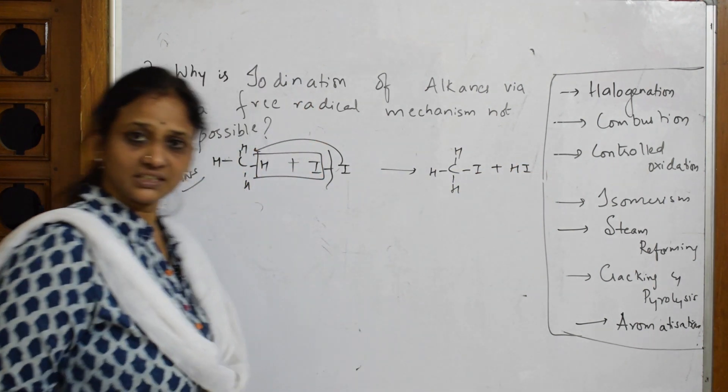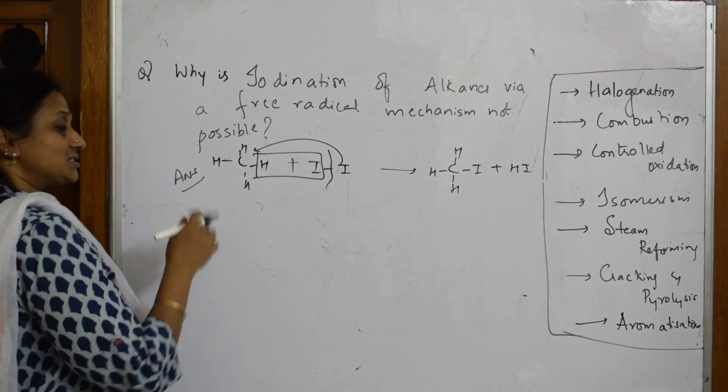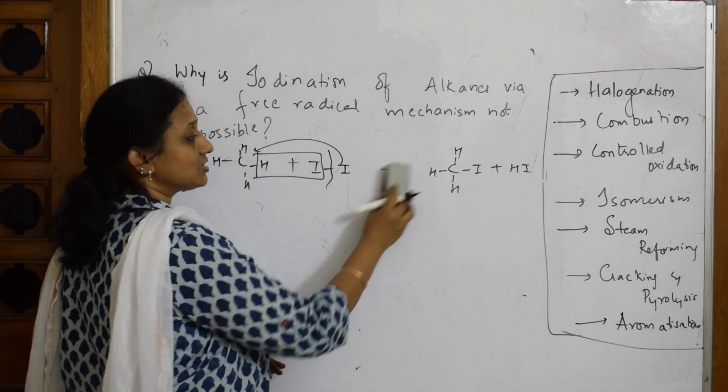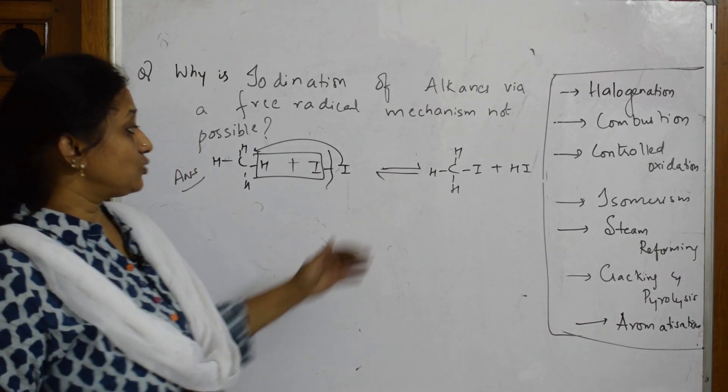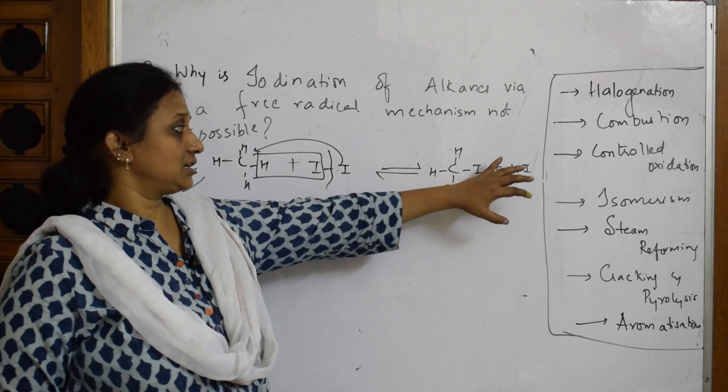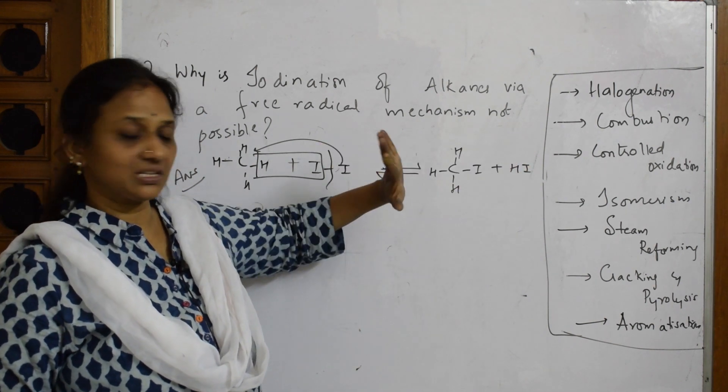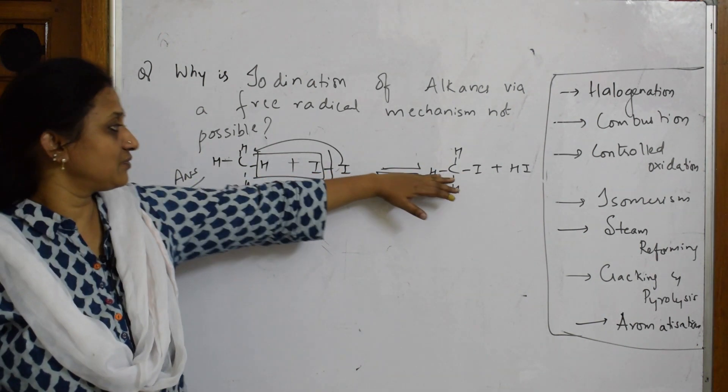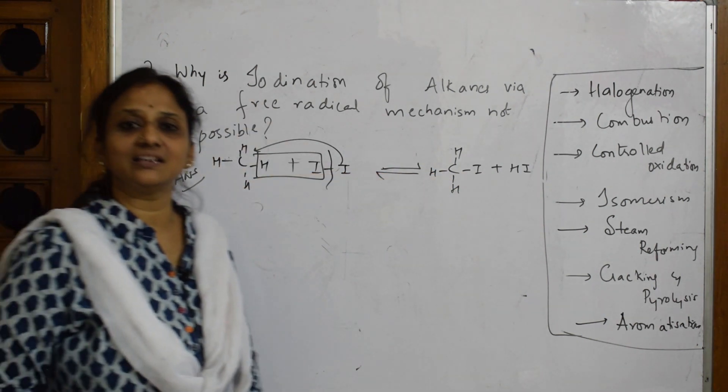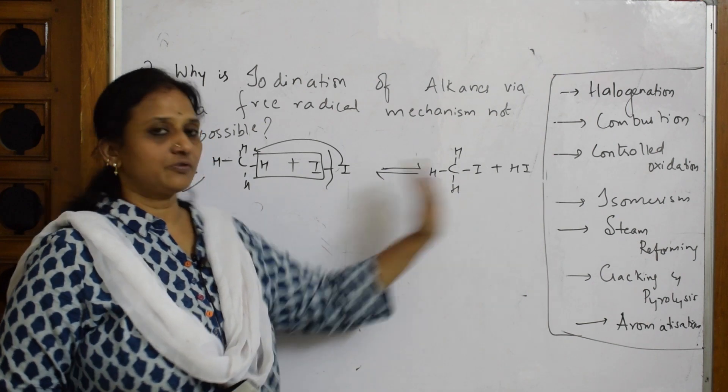Now, this particular reaction is a reversible reaction - forward and backward. Suppose if I don't take out HI, if I don't use any reagent, this particular HI will go back and get converted to the backward reaction - that is iodine again. But we want the forward reaction.